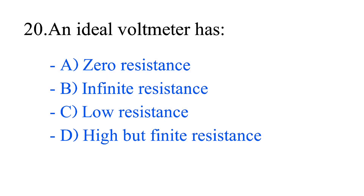Question number 20. An ideal voltmeter has: option A, zero resistance; option B, infinite resistance; option C, low resistance; option D, high but finite resistance. The correct answer is option B, infinite resistance.